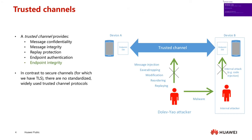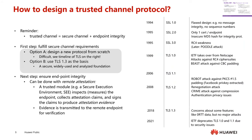This is where trusted channels come into play. A trusted channel is basically a secure channel with extra assurance of endpoint integrity, so even attacks from within the device are prevented. But the problem is that, in contrast to secure channels for which you can use TLS, there are no off-the-shelf protocols for trusted channels. So how would you go about designing a trusted channel protocol? The first thing to do is to fulfill those secure channel requirements, and you could do that by designing your own protocol from scratch.